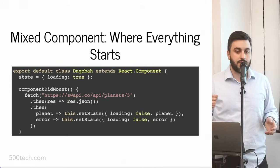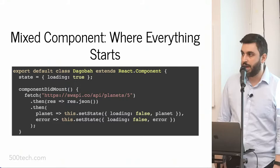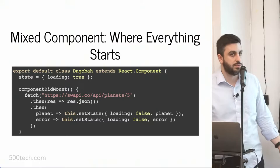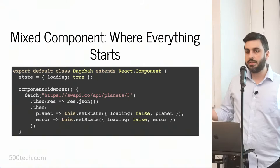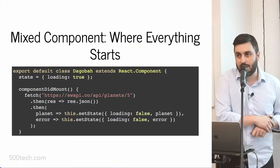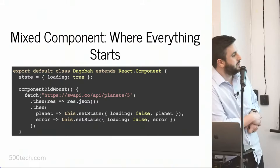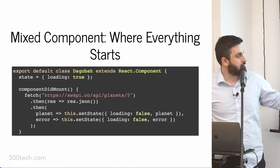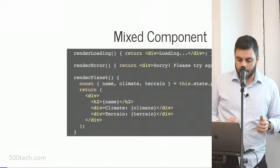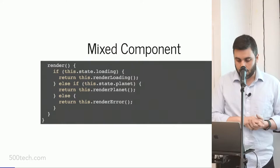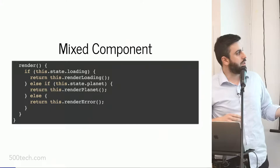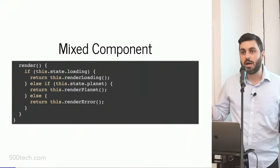So I'm going to start with what I call the mixed component pattern. This is not one of the successful patterns, but it's the most common — it's where everything starts. Whenever we start writing React components, we start this way. We have a component with some state, on component mount we're doing some side effects — here I'm fetching the Dagobah planet information from the Star Wars API. On response, I'm setting state: loading true, then loading false with either the planet or the error. Then I have a couple of methods that return React elements — the views I call on my render method, looking at state data and calling the right view method depending on the information from my side effects.